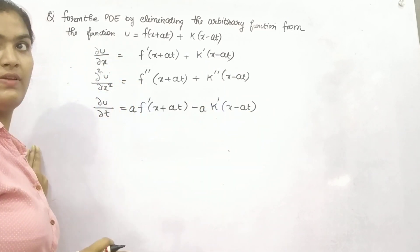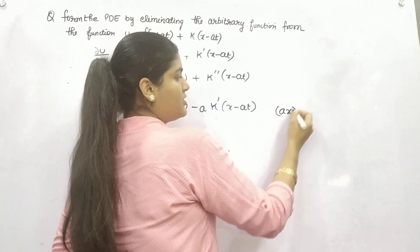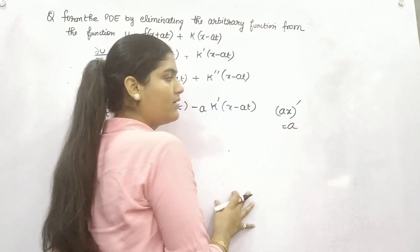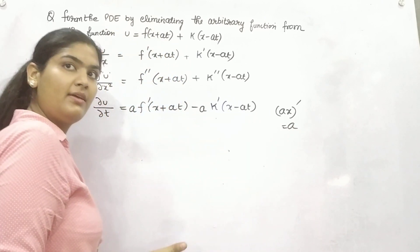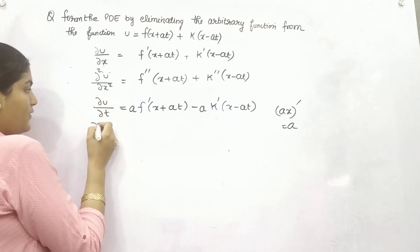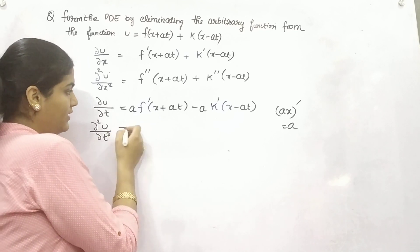So it will come out. Whenever you do the differentiation of ax, you will get a. So similarly, for minus at, it is minus a. If you again differentiate it, partially with respect to t, what will you get?